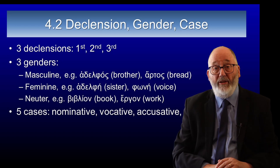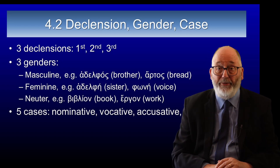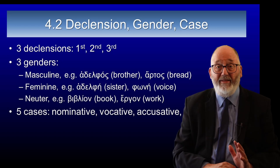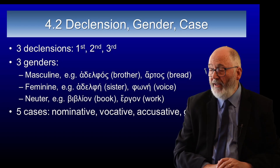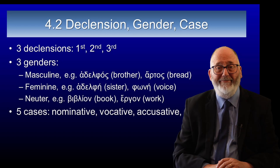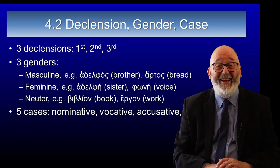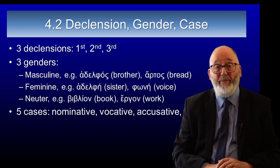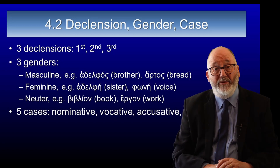Some of these make sense. Adelphos, for brother, makes sense — that's a male person, so a masculine noun works. Adelphi, a sister, is feminine — that makes sense too. But why is phonē feminine, and artos masculine, and biblion neuter? Well, they just are. If you've learned French, Spanish, or Italian, this will be no surprise. In other languages, most everything has a gender, and some genders can seem rather arbitrary. The good thing is Greek gives you clues as to what gender the noun is, and those clues will emerge as you meet the different types of noun.